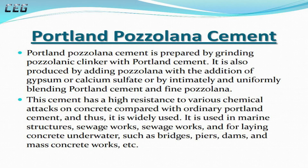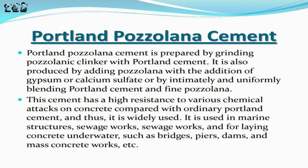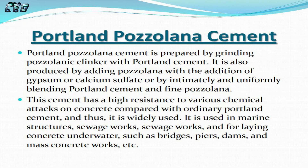Portland Pozzolana Cement is prepared by grinding Pozzolana clinker with Portland Cement. It is also produced by adding Pozzolana with the addition of gypsum or calcium sulfate, or by intimately and uniformly blending Portland Cement and fine Pozzolana. This cement has a high resistance to various chemical attacks on concrete compared with Ordinary Portland Cement, and thus it is widely used.